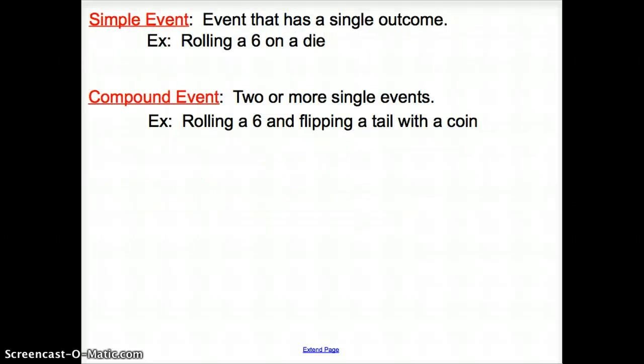Another couple of vocab words. A simple event is an event that has a single outcome. So an example would be rolling a six on a dice. You only have one outcome of that event. A compound event would be two or more single events. So you could be rolling a six on a dice, and then flipping a tail with a coin, right? So you would have one and then two single events. You obviously could have more.